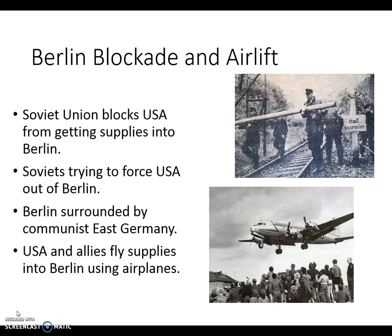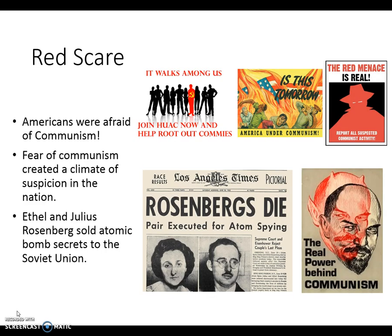Stalin got worried that the Allies and the United States were trying to force themselves to take over Berlin. So he wanted to force them out, and he blockaded Berlin — not allowing the trains, cars, convoys, or boats on the canals to get through and deliver supplies into West Berlin. As a result, the United States and the Allies decided to fly supplies into Berlin using airplanes. This is called the Berlin Airlift.